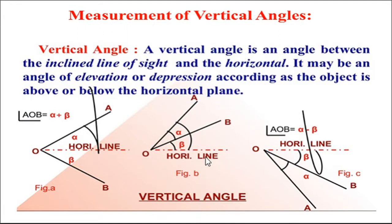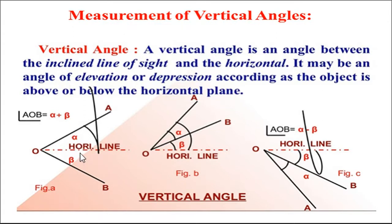Next, measurement of vertical angle. Vertical angle also plays a very important role as far as theodolite surveying is concerned. A vertical angle is the angle between the inclined line of sight and the horizontal. It may be an angle of elevation or angle of depression depending upon whether the object is above or below the horizontal plane. If point A is above the horizontal line, then this angle alpha is called the angle of elevation. When we sight point B below, this angle beta is called the angle of depression.